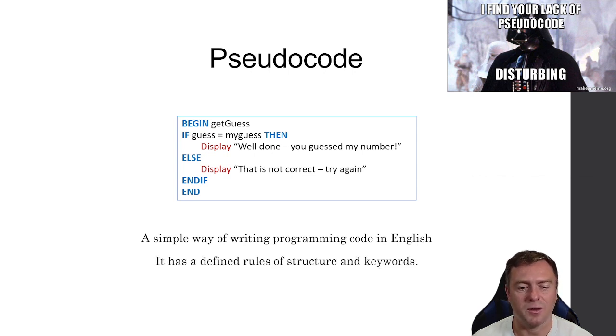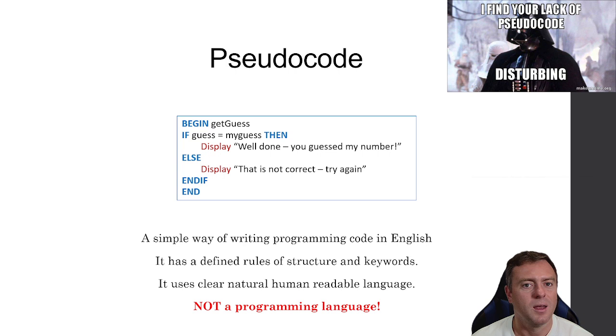It's not as overwhelming. There's a defined rule of structures and keywords. It uses clear, natural, human-readable language as well. So that's a bit easier. The important thing here is pseudocode is not a programming language. So let me say it again. Pseudocode is not a programming language. It's built so that other people can pick up the code, and then they can convert it into their language of choice. So you might look at the pseudocode and then go, well, actually, I'm going to develop this in C instead of Python. But because it's been made in a nice generic way with the pseudocode, it allows that transferability.